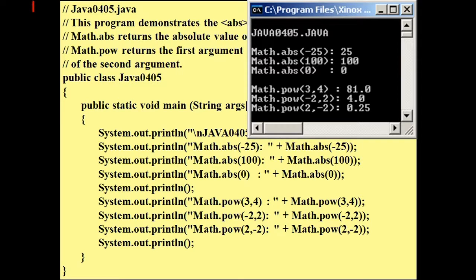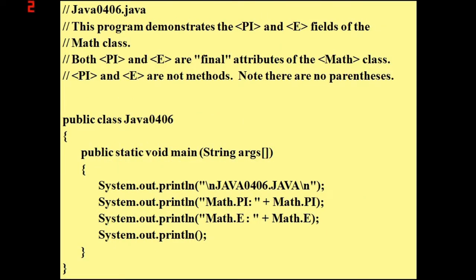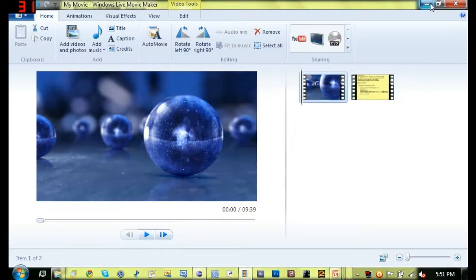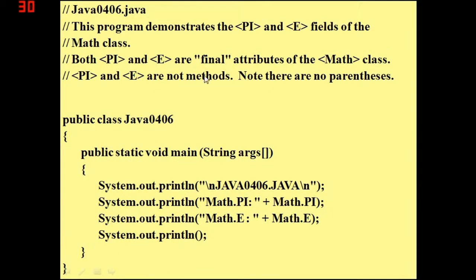This is probably gonna be the last thing in the tutorial depending on whether something else comes next after this from the Math class. In the Math class they also have built in a PI method and the E method. Basically what PI is is 3.14159 all that other stuff.